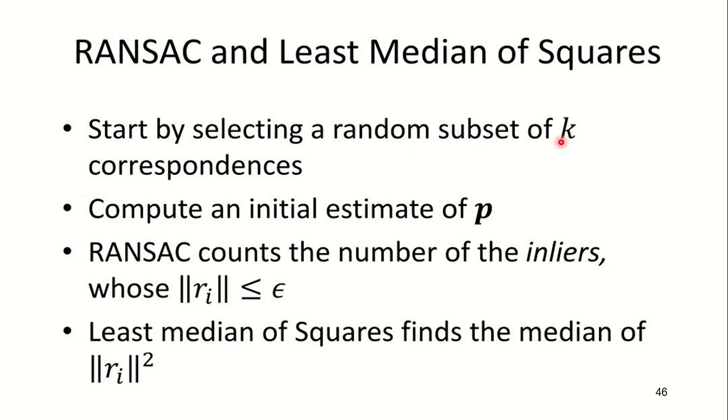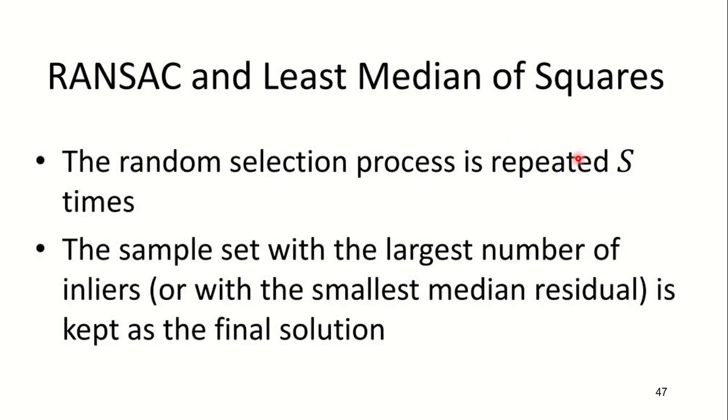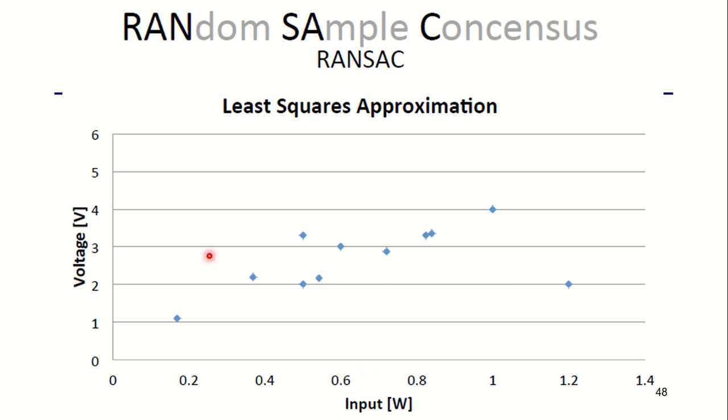You start by selecting a random subset of k correspondences, compute an initial estimate of p, and RANSAC counts the number of inliers whose |ri| ≤ ε. Least median of squares finds the median of modulus residual squares. The random selection process is repeated S times because your total number of samples is S. The sample set with the largest number of inliers is kept as the final solution.